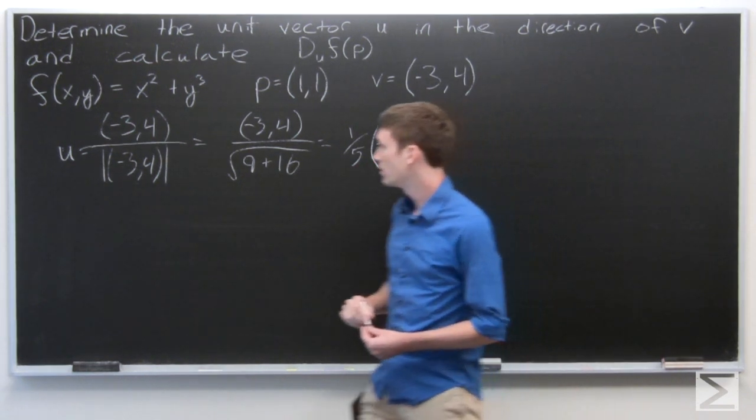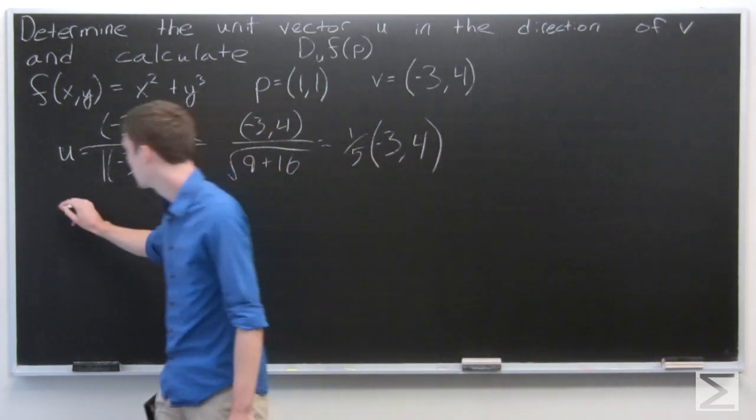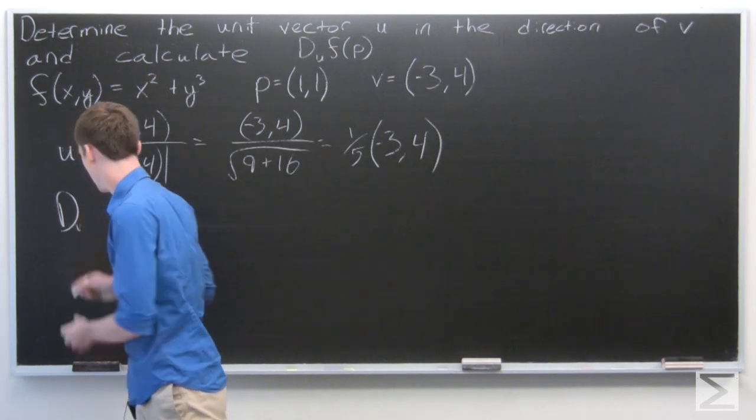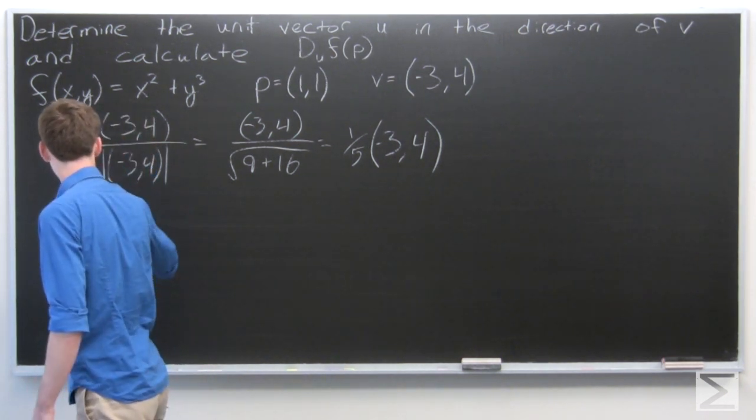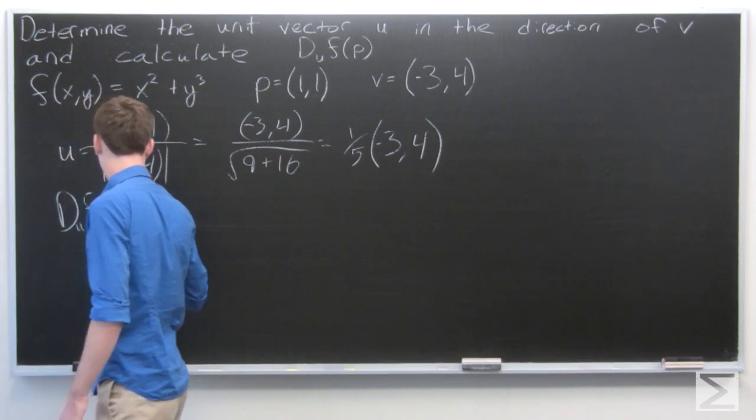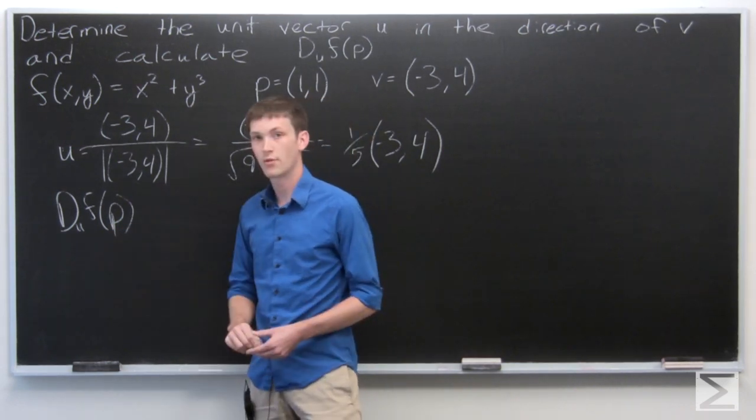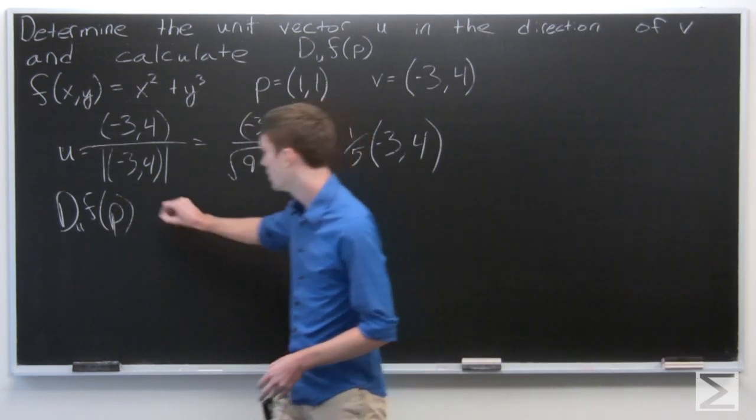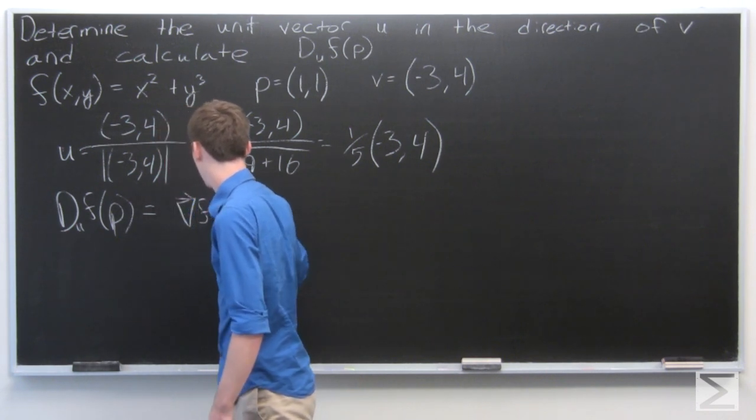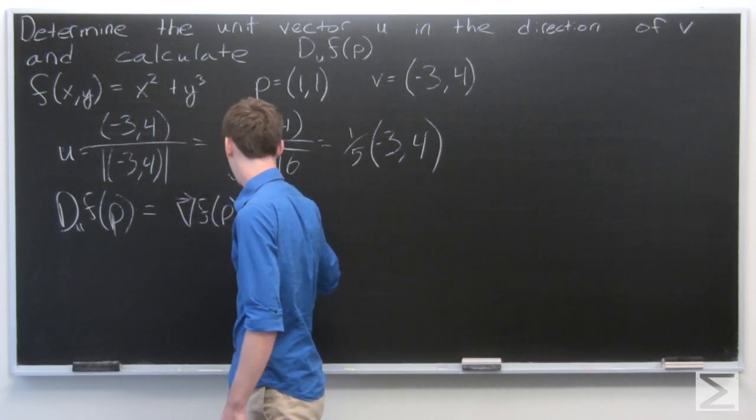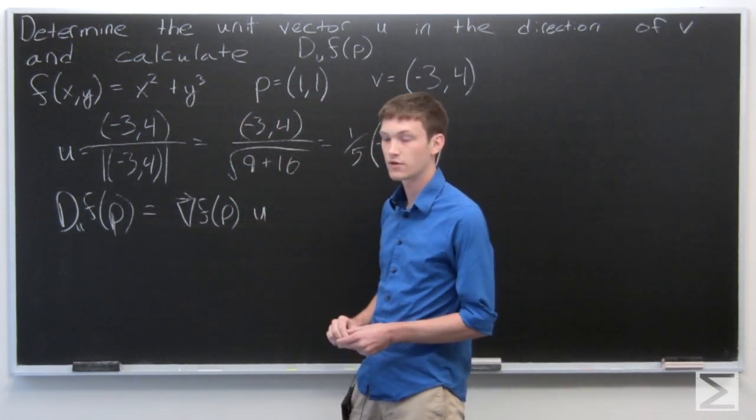So now we want to calculate the directional derivative of f at p in the direction of u. And we know that is equal to the gradient of f at p dotted with our vector u.